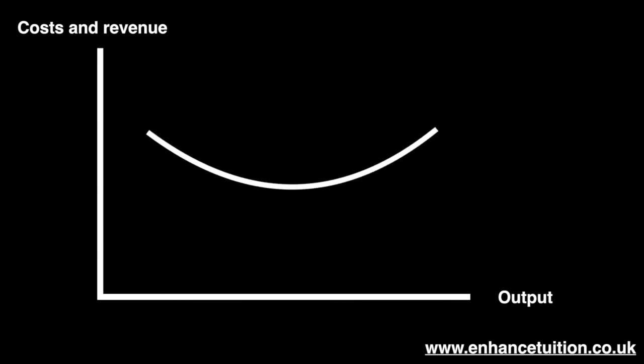Let's start with the year 2005 and draw a firm's average cost curve as AC 2005. If we assume this firm has some market power and is able to earn supernormal profits, it is then able to invest some of that money back into improving processes and business practices, eventually resulting in greater efficiency and lower costs. Firms are able to do this by investing in human capital or by innovation driven by research and development. Competition can also force innovation that will reduce costs in order to maintain profit levels.